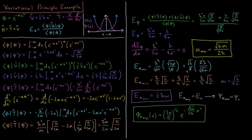This video will show an example of how to use the variational principle to calculate the best possible approximation to the ground state energy and wave function for a quantum mechanical system where we don't know the exact result. The system we're going to approximate is the harmonic oscillator. We already know the exact solution, so we can verify our result.